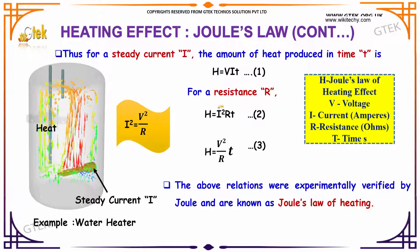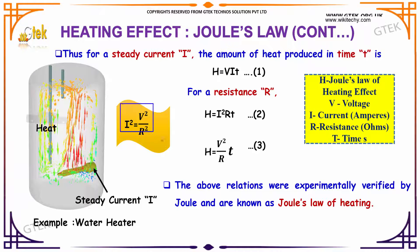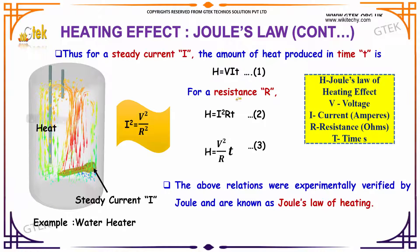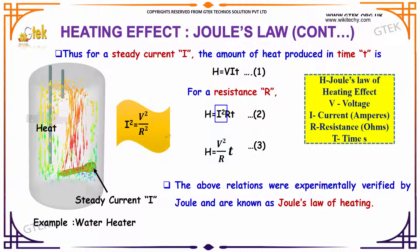As we know Ohm's law, V = I × R, therefore I = V / R, and I² = V² / R². Since Joule's law of heating gives H = V × I × T, substituting V = I × R, we get heat H = I²RT. Alternatively, substituting I² = V² / R², we get heat H = V²T / R.